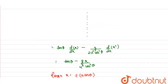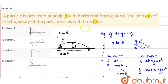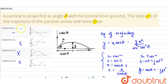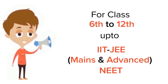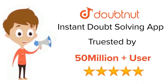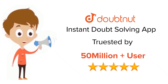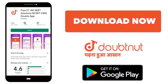Choosing from the options, all three options are considered. Option one shows a straight line with a negative slope and a positive intercept, so option one is correct. For class 6 to 12th, IIT-JEE and NEET level, trusted by more than 5 crore students — download DoubtNet today.